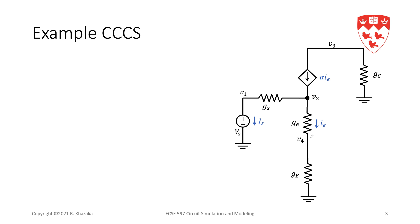In order for ie to be the controlling variable for this current source, we need ie to be one of our variables in the unknown vector x. As a result, we need to put a zero valued voltage source or short circuit in series with resistor ge. We add this short circuit, which results in an additional node 5, so now we have node 4 and node 5 connected together with a short circuit, and the current ie is the current in this short circuit.